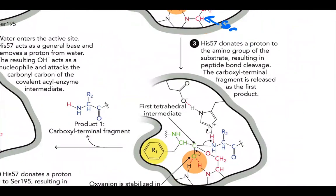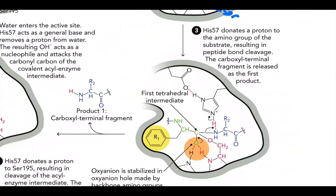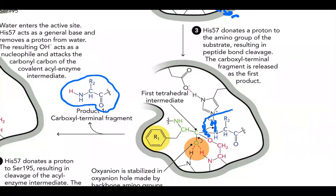His-57 is going to donate a proton to the amino group of our substrate. Now that His has the hydrogen, we're going to transfer it from His to our substrate — and we're going to get peptide bond cleavage. The carboxy-terminal fragment is going to be released, and that's going to be our first product. That's our first bit that gets kicked out of the enzyme.